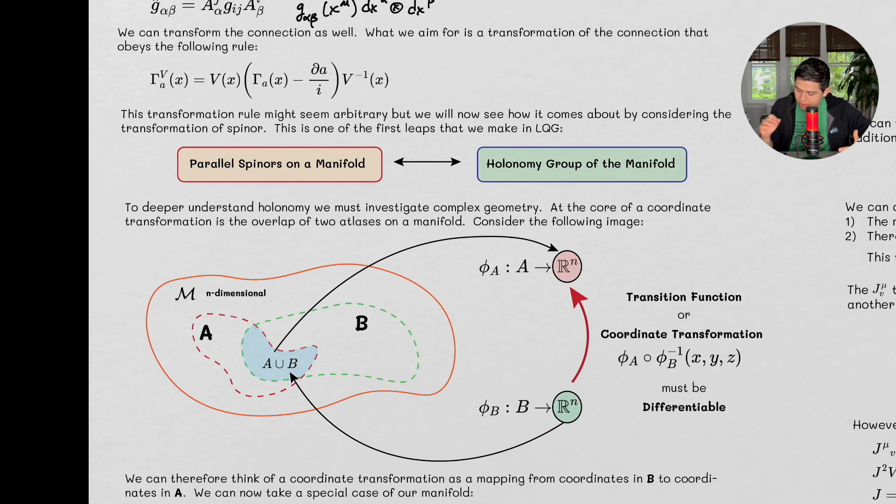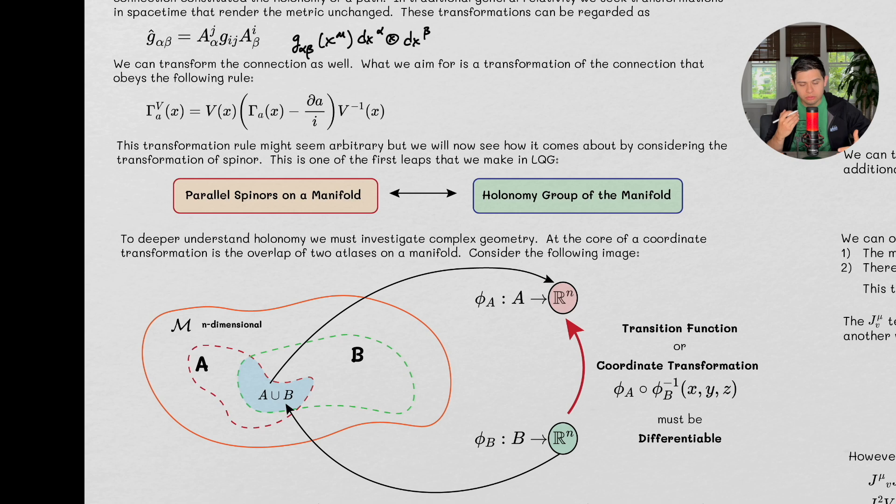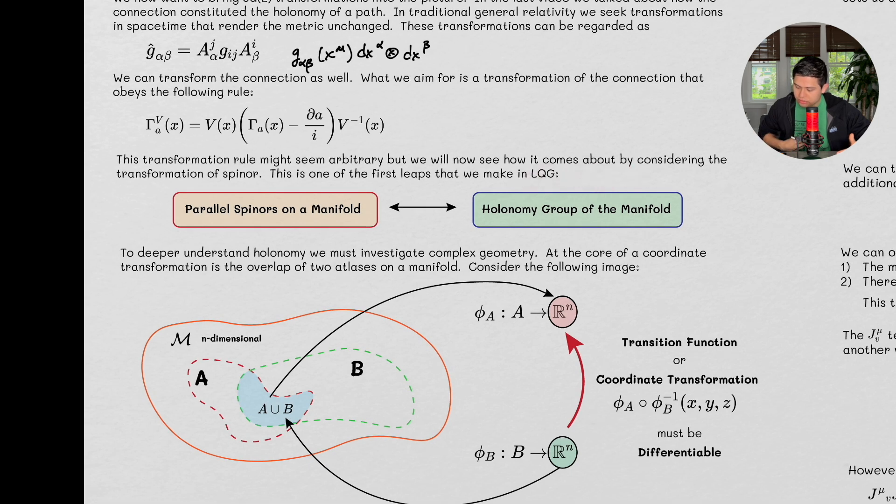Before we get to this point, though, I just want to hit home the punchline here one more time. The transformation rule might seem arbitrary at first, but we are going to see how it comes about by considering the transformation of a spinor, and this is one of the first leaps that we make in loop quantum gravity.